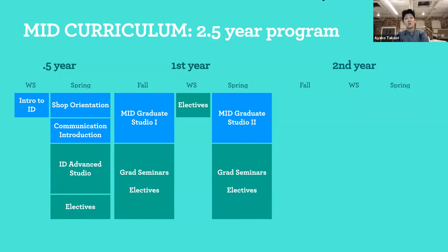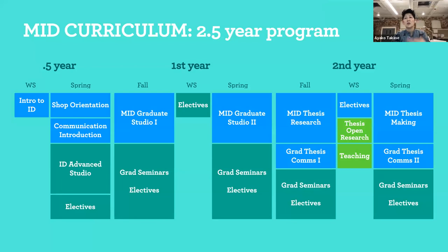In the spring, we have Graduate Studio 2, where you switch from more experimental design to commercial, applied, or responsible design for a specific audience. The second year is the thesis year, with more requirements: Thesis Research Studio meets twice a week, and we have a course called Mapping and Narrative — where you connect the dots of what you're creating in thesis studio — plus other electives.